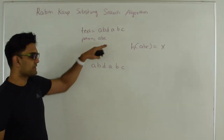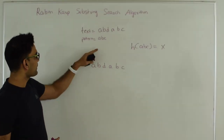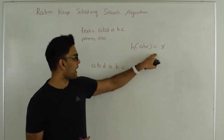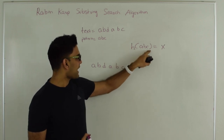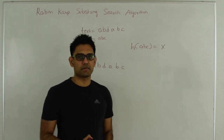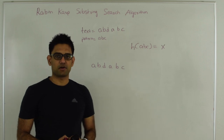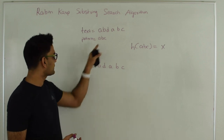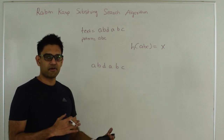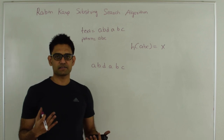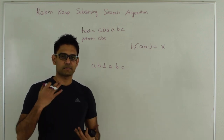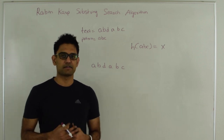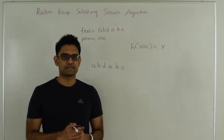Let's see how Rabin-Karp algorithm works. Let's say I have this text and this pattern and I want to find if this pattern exists in this text or not. First we generate a hash of the pattern — let's say the hash of pattern ABC is a number X. Then we take all substrings of the same length as the pattern and compare their hash with the pattern's hash. If both hashes are the same, then we compare that substring with the pattern to make sure it is the same, otherwise we move on to the next character.